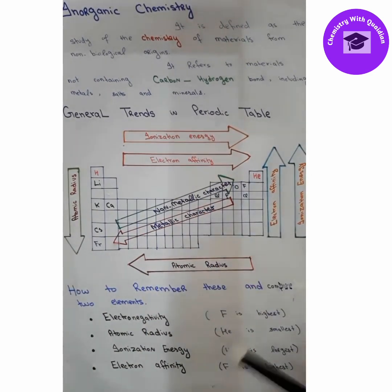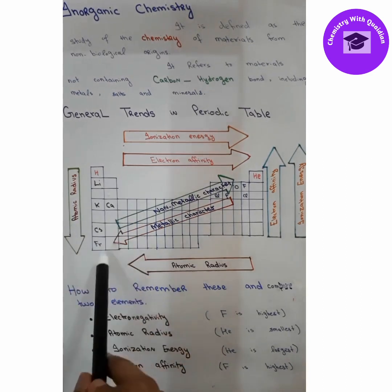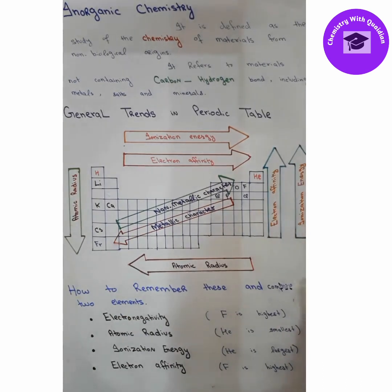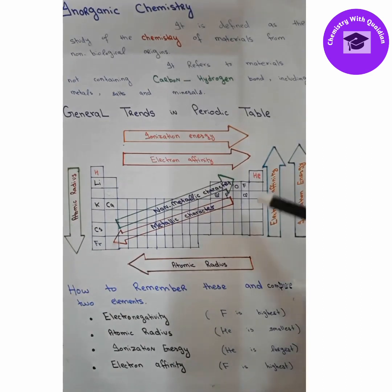Now let's move to atomic radius. What is atomic radius? Atomic radius is basically the size of the atom. The size of the atom increases when the number of shells increases, and the number of shells increases down the group. The number of shells remains constant along a period. Helium has the smallest atomic radius, so elements close to helium have small atomic radius while those far from helium have large atomic radius.